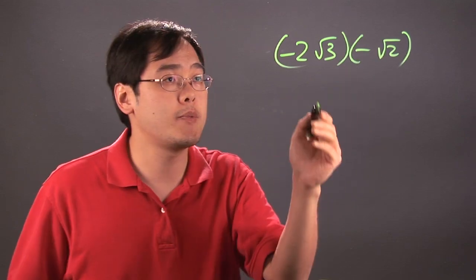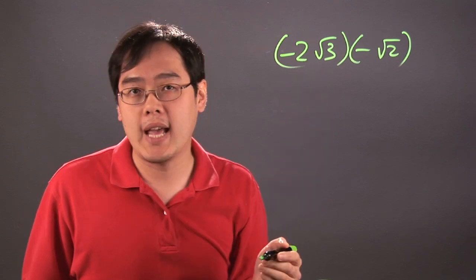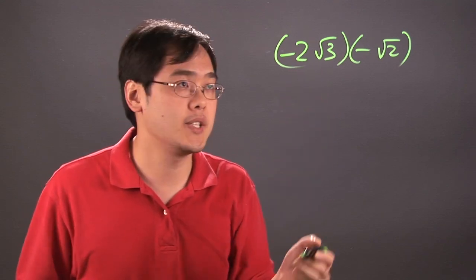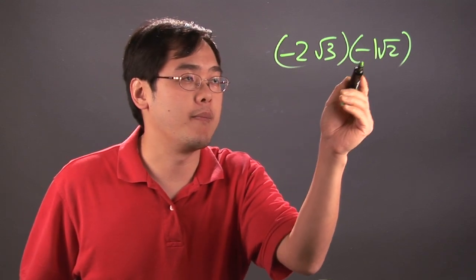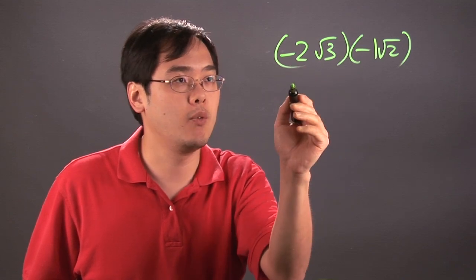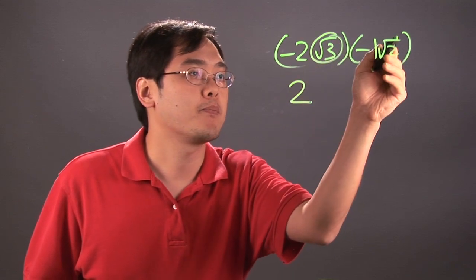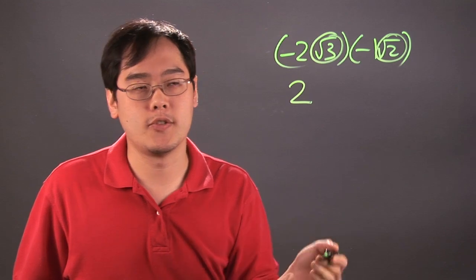Now when you multiply square roots, you multiply the terms on the outside and then you multiply the terms on the inside. So in this case, just put a 1 there, negative 2 times a negative 1 is going to be negative 2, and then you multiply square root of 3 times square root of 2.